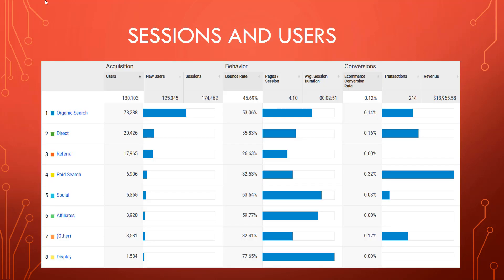When looking at sessions and users, the data shows that organic search is by far the biggest percentage of users. Although organic search only had the third highest conversion rate, it did show the second most revenue earned. Direct search was 43.73% of the revenue, and the only other search close to that was paid search.